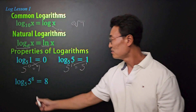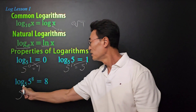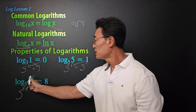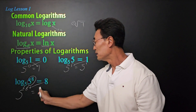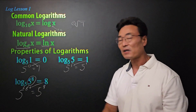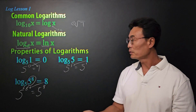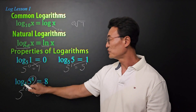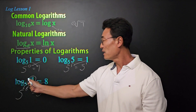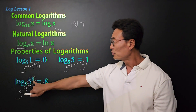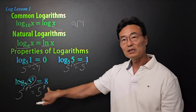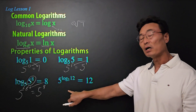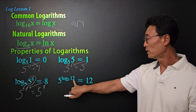Next, when we have log base 5 of 5 to the 8th power, it's going to equal 8. You can think of it this way: if you have log base 5 of 5 to the 8th power, go ahead and cross out the log base 5 and the 5, so that you have the 8 left over as the answer.